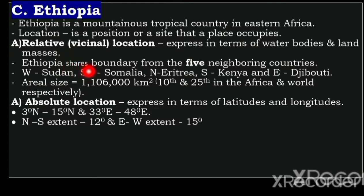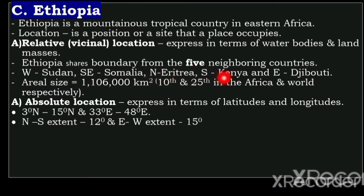Ethiopia shares a boundary with five neighboring countries: west of Ethiopia is Sudan, southeast of Ethiopia is Somalia, north of Ethiopia is Eritrea, south of Ethiopia is Kenya, and east of Ethiopia is Djibouti. The real size of Ethiopia is one million, one hundred and six thousand square kilometers.